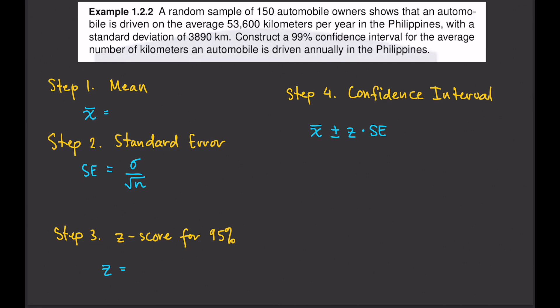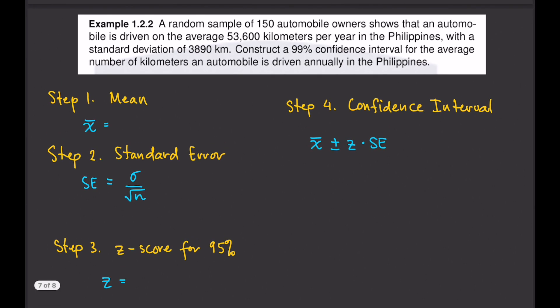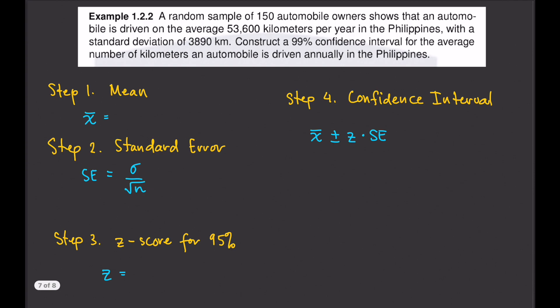Step number one is to find the mean. The keyword here is 'average,' so the sample mean x-bar is 53,600 kilometers.